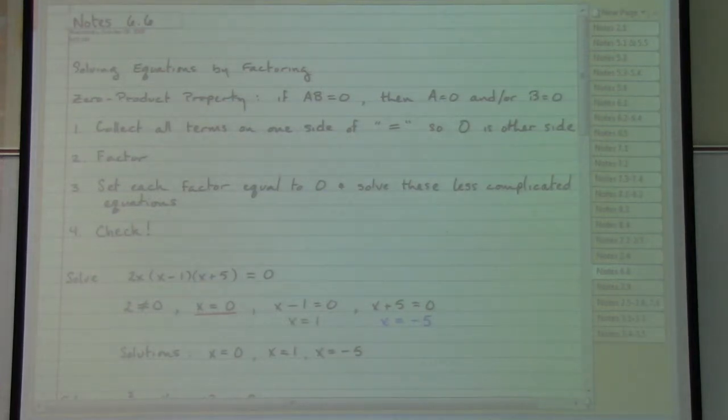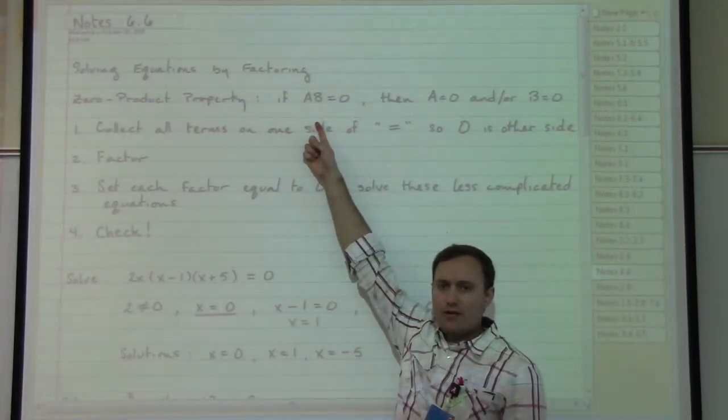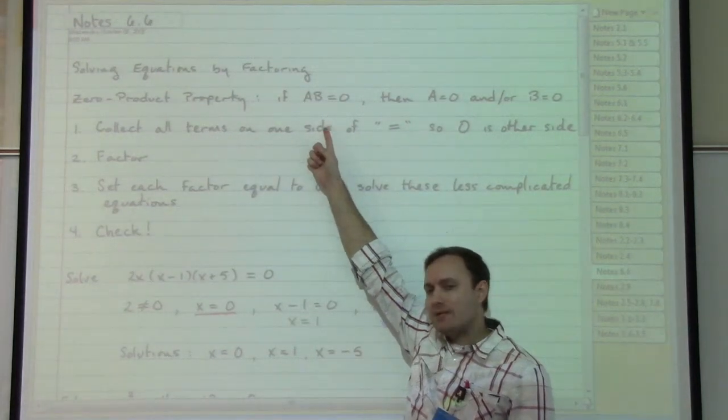Now that we've dealt with basic equations where the variable only has a power of 1, we can move on and deal with more complicated equations where our variable could have a higher power, a power of 2 or even larger. In order to do so, we have to bring back in our factoring knowledge, and we're also bringing in a very specific and special multiplication situation. If we multiply two things together and get zero, then that means that one of those two factors has to be zero.